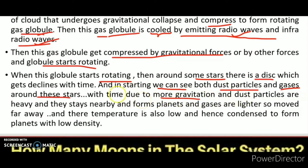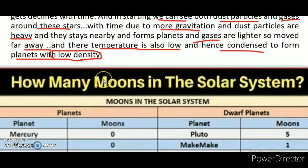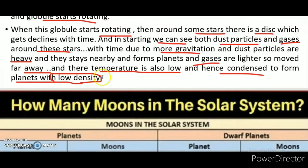As the globe keeps rotating, around some stars a disk forms, which declines with time. Initially we had dust particles and gases; due to gravitation, compaction and compression occurred. The heavier material accumulated while lighter particles — basically gases — moved far away from the center, and their temperature fell. These condensed to form planets: high-density planets near the center, low-density planets farther away.